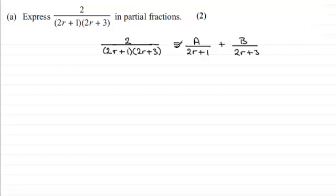Notice I've used an identical sign here rather than an equal sign. Next we need to get rid of the denominator here, (2r + 1)(2r + 3). And we do that by multiplying both sides by (2r + 1)(2r + 3).